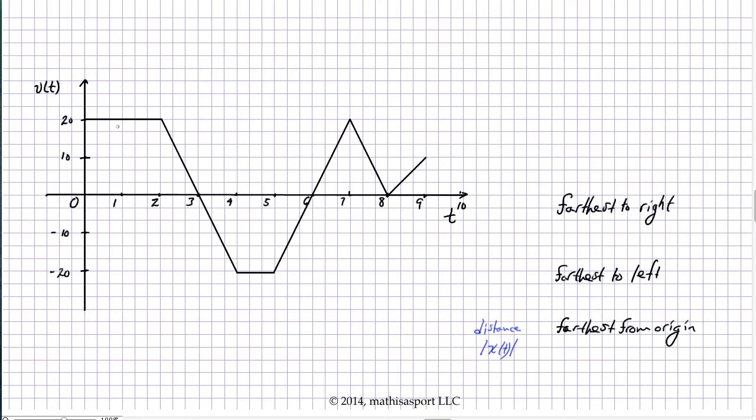So, if I'm looking just for when I am farthest to the right, I know, no matter where I am, that it does not occur at t equals zero, because I'm continuing to add signed area as I move up until t equals three. Now, what happens right at three? Right at three, I start adding negative signed area. So, one possible place where I could be farthest to the right would occur at t equals three.